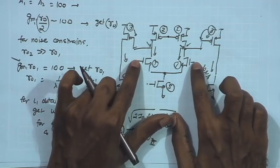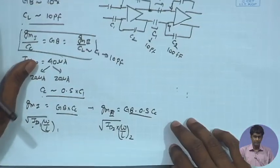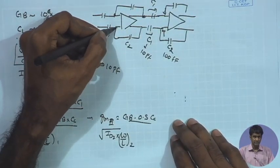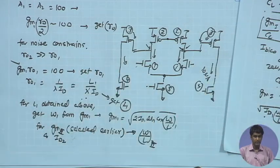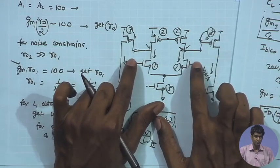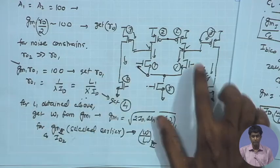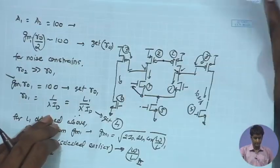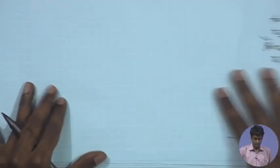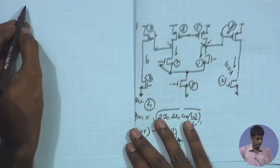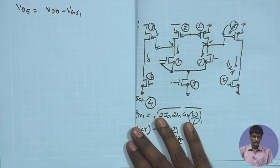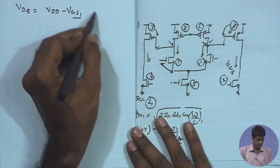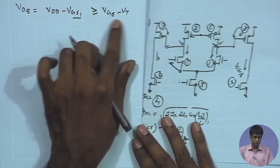With the overall feedback operation using a chopper-capacitor amplifier, the signal swing at the input nodes is not going to be significant — these two points remain close to a constant DC potential. The DC potential is known: VDD/2. For that, we have a VGS drop for M1, and therefore VD5 is going to be VDD/2 minus VGS1.